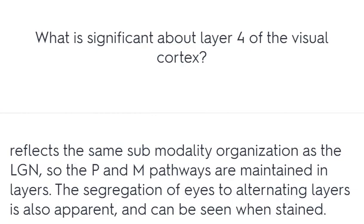What is significant about layer 4 of the visual cortex? It reflects the same sub-modality organization as the LGN, so the P and M pathways are maintained in layers. This segregation of eyes into alternating layers is also apparent and can be seen when stained.